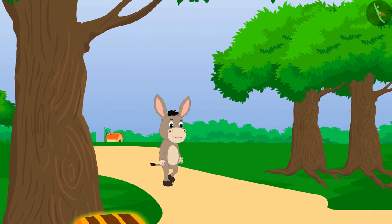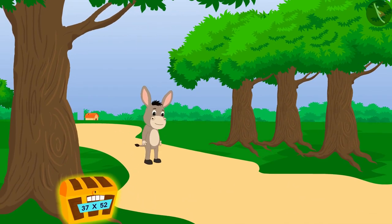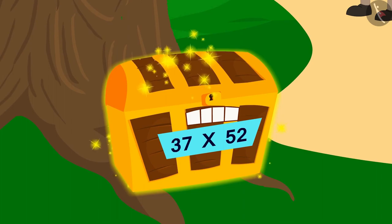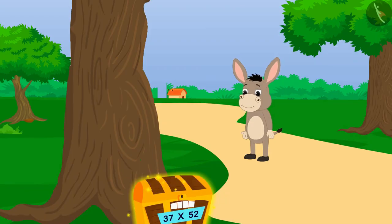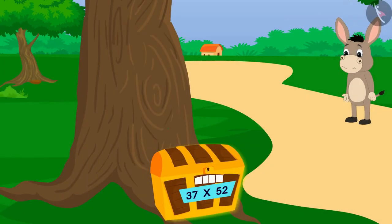Bhola is passing through the forest. He saw a shiny object at some distance. What is this shiny object? It's a box.